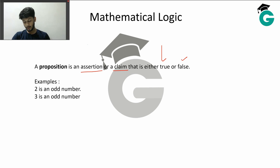For example, '2 is an odd number' — well, this is false. Or what about '3 is an odd number'? Well, this definitely is true.